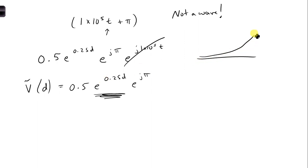If there was a minus sign in the exponent, it would be a decaying exponential, which means our amplitude would be changing with distance D.